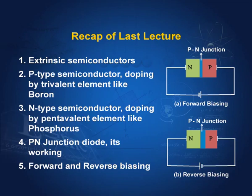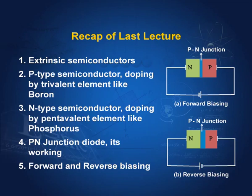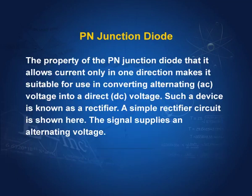Remember that if the P-side is positive and the N-side is negative, it is forward biasing and current flows. As soon as the polarity changes, current does not flow. This is called the unidirectional property of the P-N junction. The property that it allows current only in one direction makes it suitable for converting AC voltage into direct DC voltage.